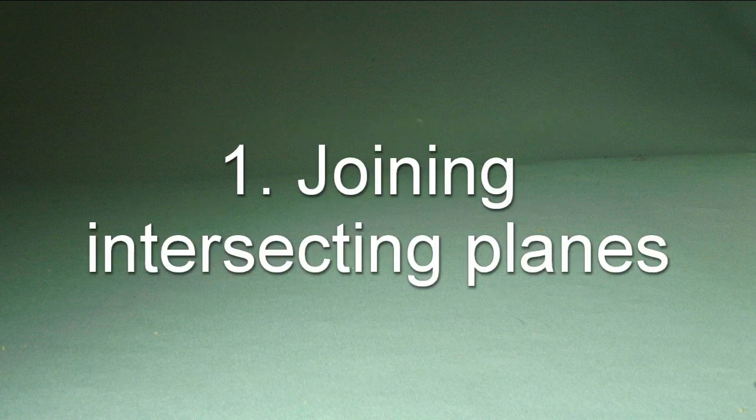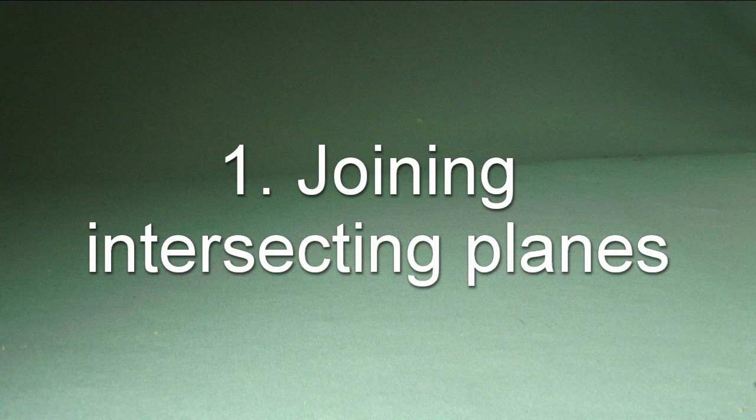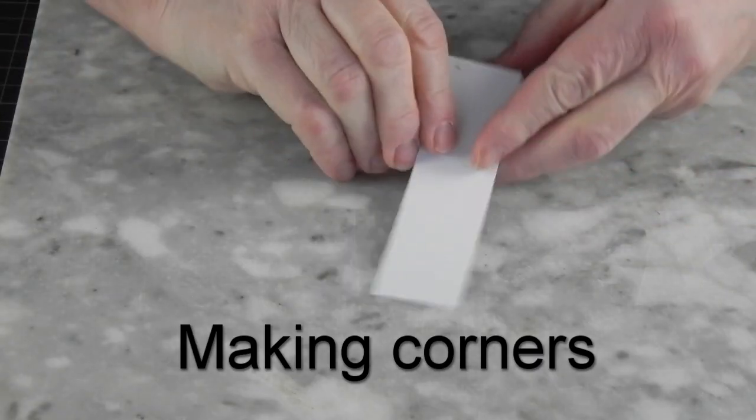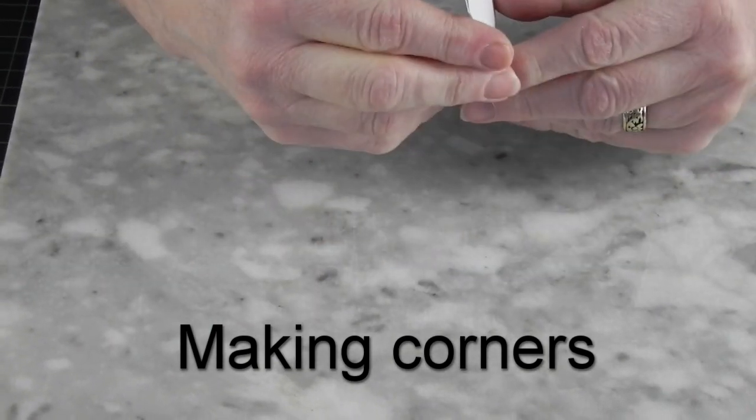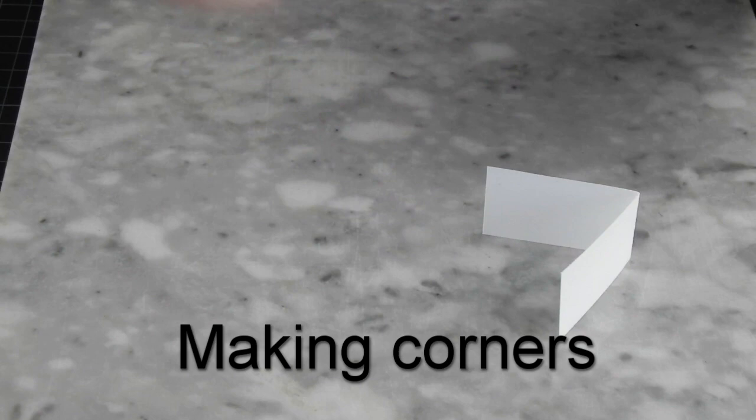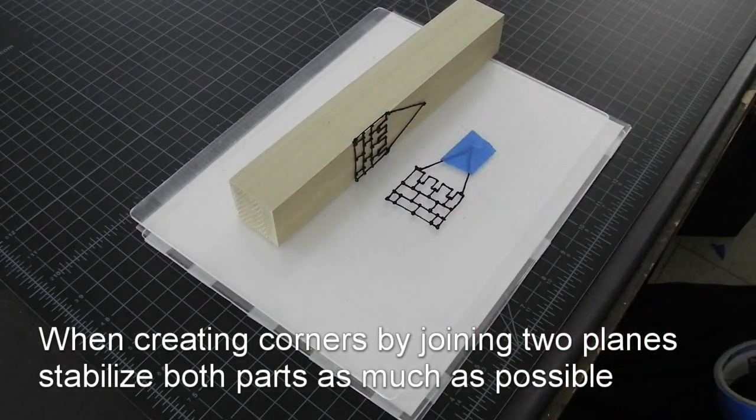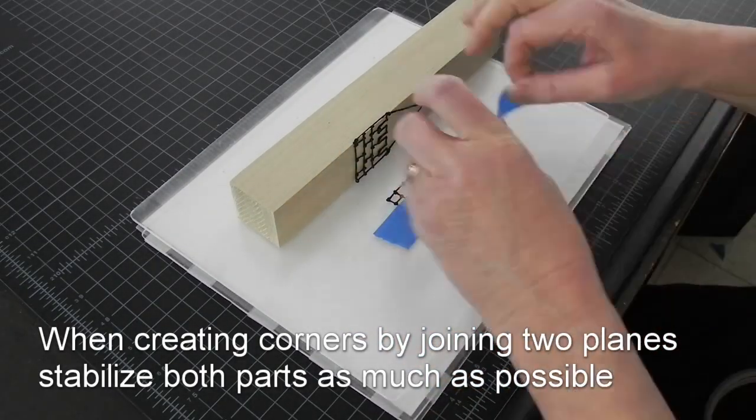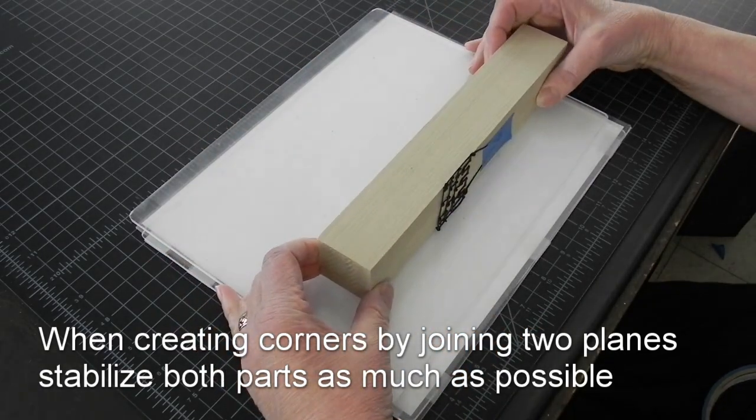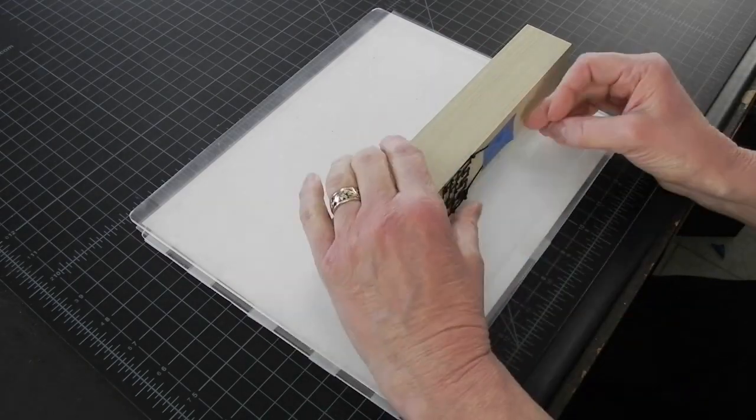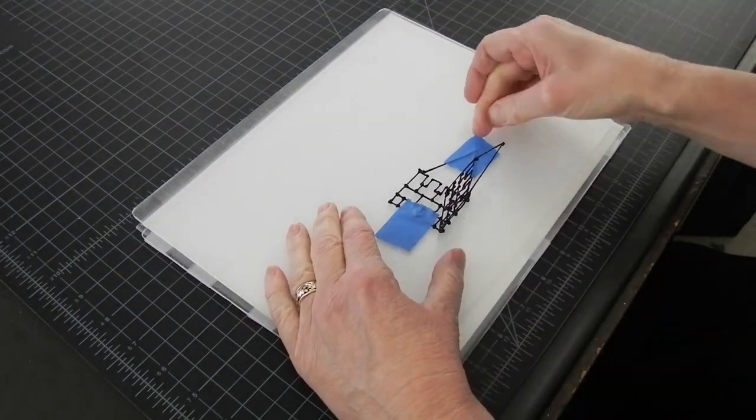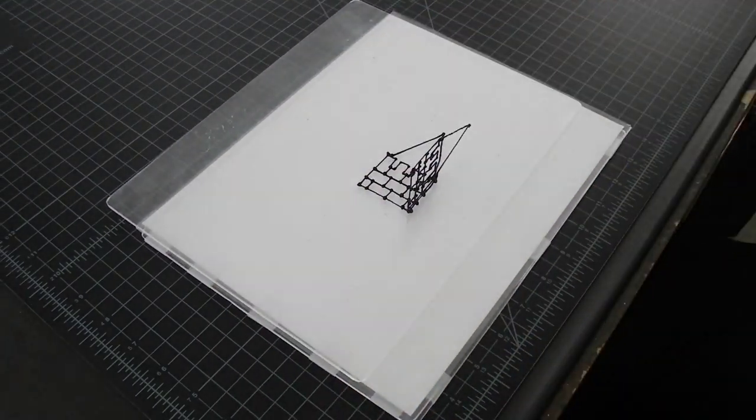The simplest way to make something 3D is to take two flat planes and join them together. As we know from origami, a single fold can make a flat sheet of paper 3D. When you do join the two planes, remember the third S for success, which is stability, and tape everything down. It will make your life a lot easier if things do not budge as you are trying to join them.